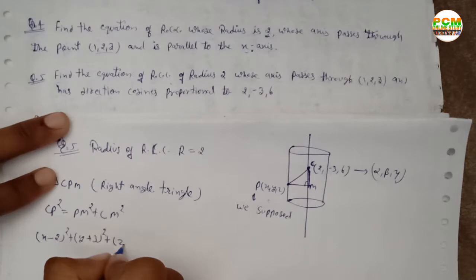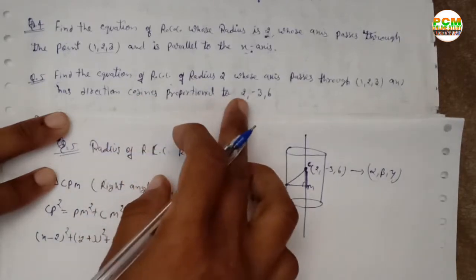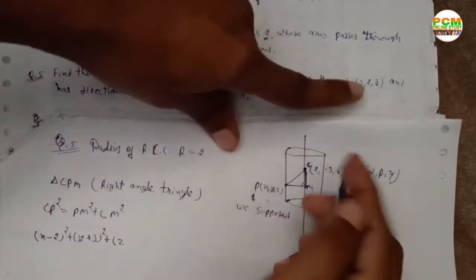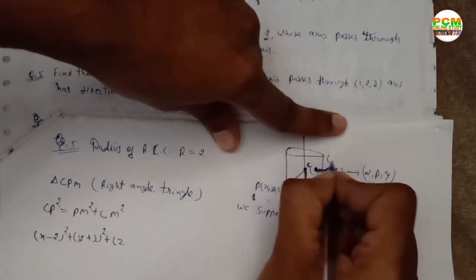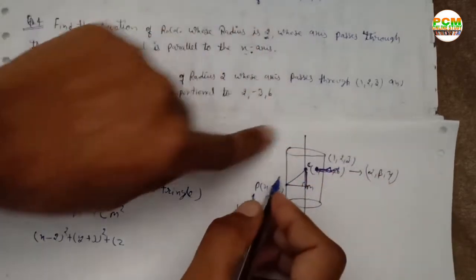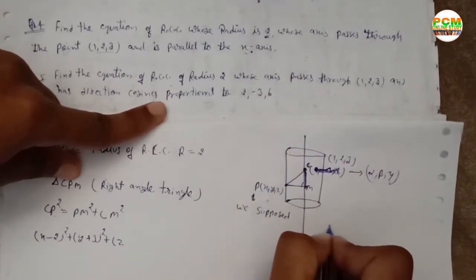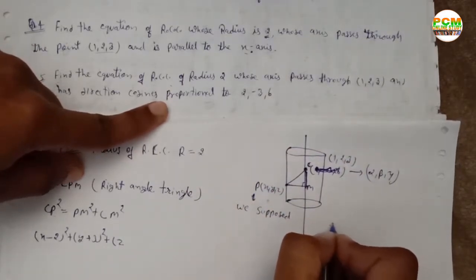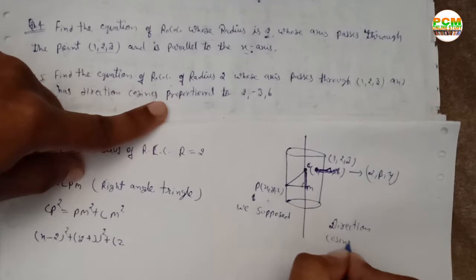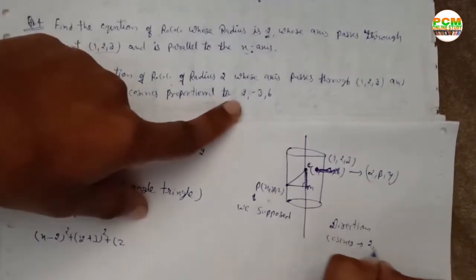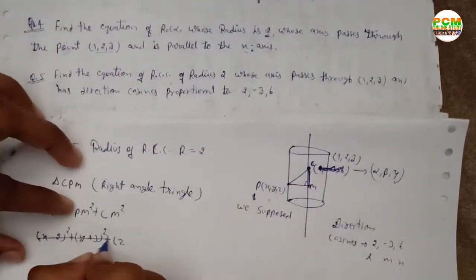Just one minute — correction: the axis passes through (1, 2, 3), so (1, 2, 3) is the coordinate of point C. The direction cosines are (2, -3, 6), so l, m, n equals 2, -3, and 6.